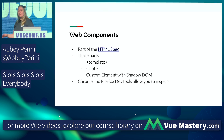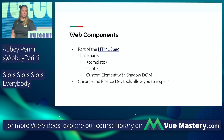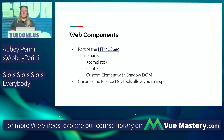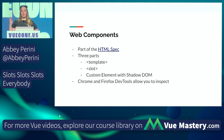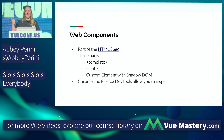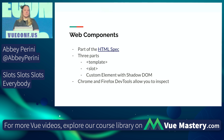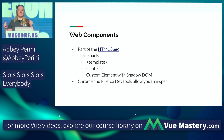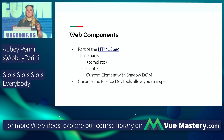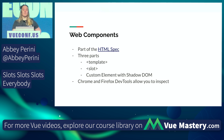I found that building web components really helped with this. They're part of the HTML spec. You may have heard about custom elements — that's part of it. If you build a slot in web components, it'll have three parts: a template tag, a slot tag, and a custom element with the shadow DOM. Because it's built into HTML, Chrome and Firefox dev tools allow you to inspect it. So if you build a web component and you play around with it, you can see exactly what changes right in the dev tools without installing anything.